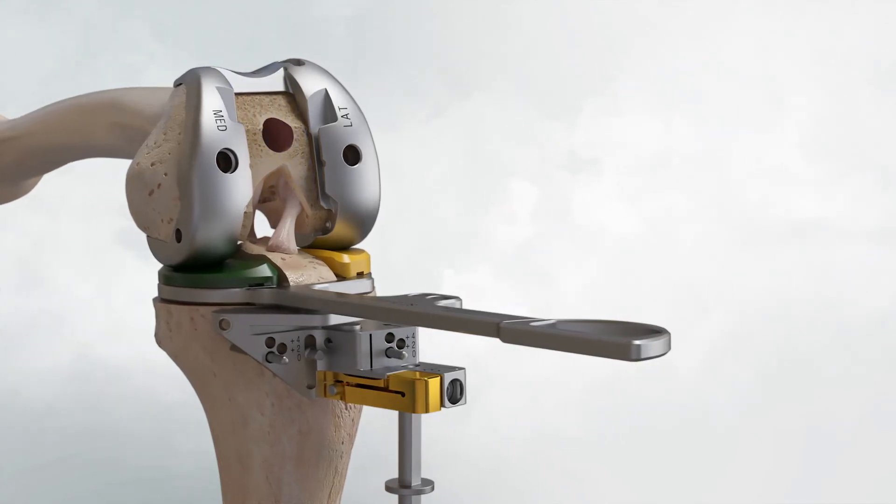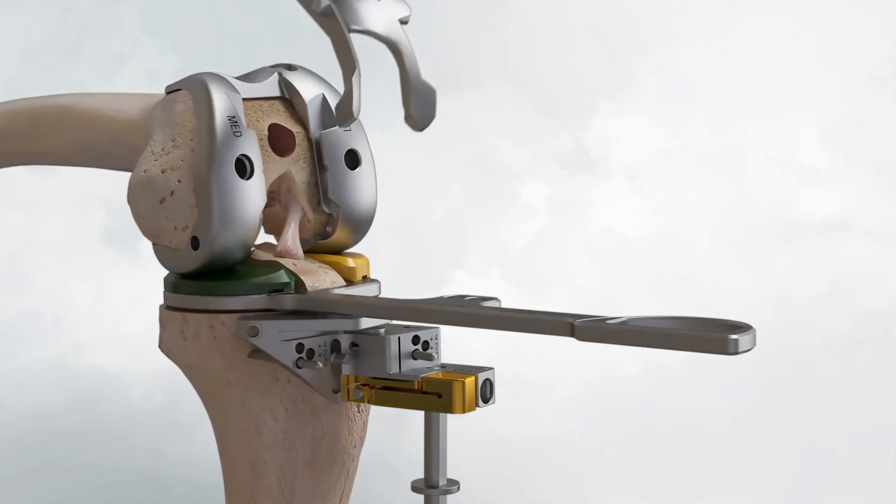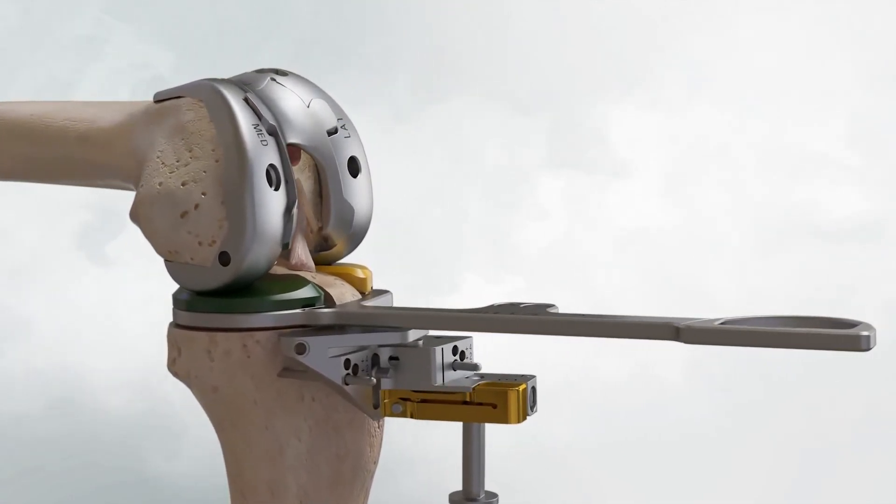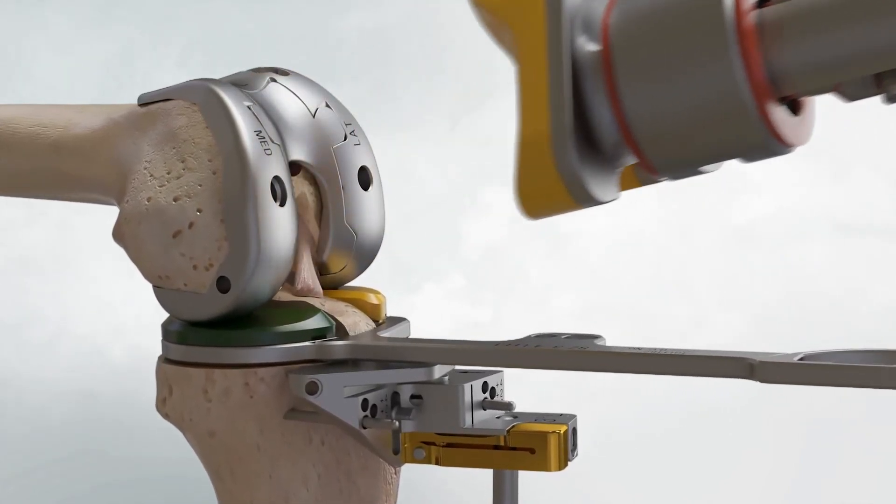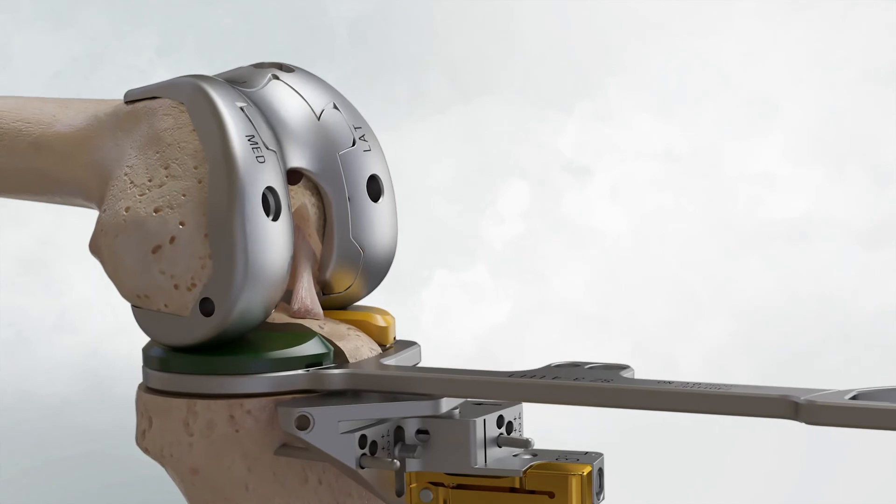Select the appropriate size CR notch trial and engage the anterior portion of the notch trial first. Then use the femoral impactor to impact the posterior portion of the notch trial until it sits flush with the femoral trial.